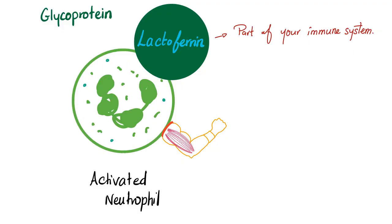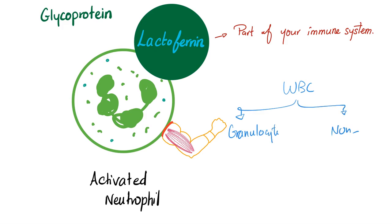Here is your neutrophil. White blood cells are divided into two big groups: granulocytes, those cells that have granules, and non-granulocytes, those who do not have granules. The granulocytes — remember the mnemonic BEN. The most important is the N for neutrophils, which has neutral granules, neither acidophilic nor basophilic. The E is eosinophils, with eosinophilic granules. The B is basophils, with basophilic granules. The most numerous and most important is the neutrophil.